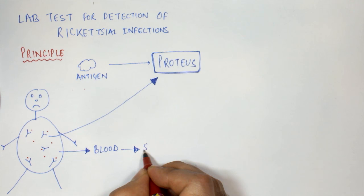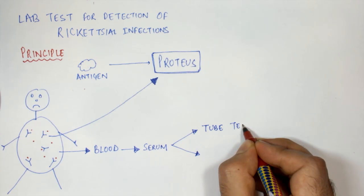To do this test we take the blood sample from that patient and we separate the serum from the blood. There are two methods of doing this test: the tube test and the slide test.